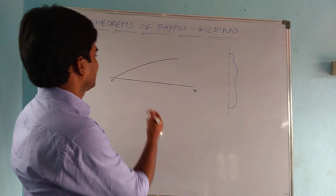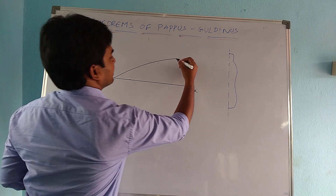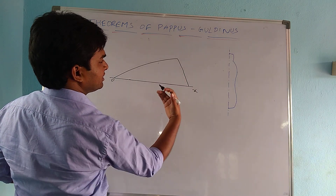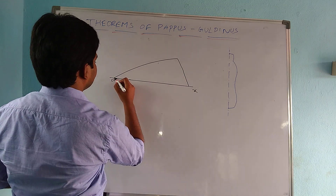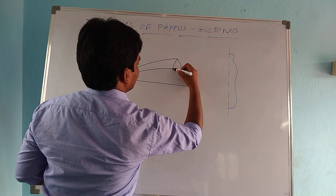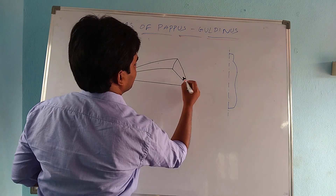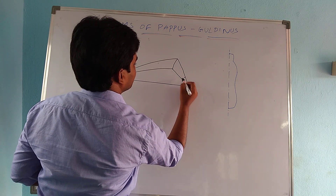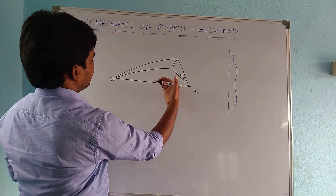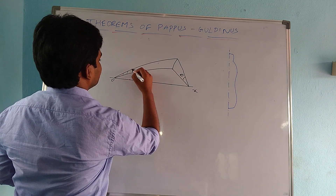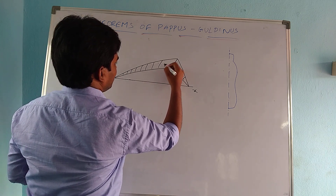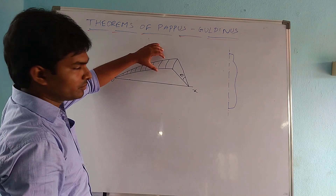For this, I am taking a plane curve and now I am rotating this plane curve for some angle theta. Because I have rotated it, there is some surface area developed. So we are going to calculate this developed surface area.